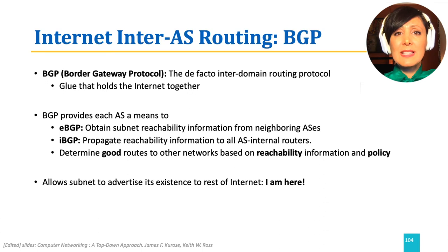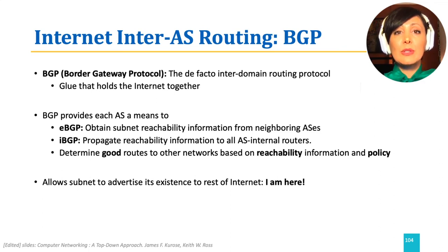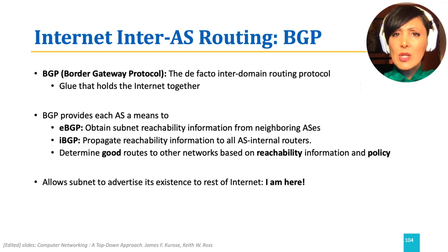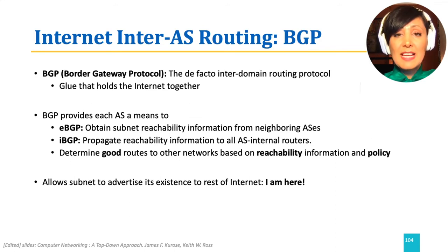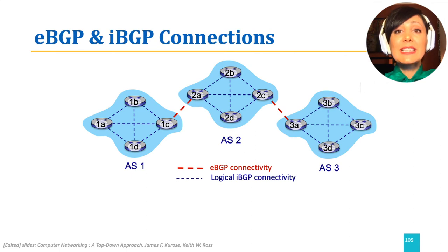Recalling the responsibilities of inter-AS routing: EBGP is responsible for obtaining subnet reachability from neighboring routers. IBGP propagates that reachability information to the routers within one AS. In other words, an AS tells the rest of the world that it exists using EBGP, and propagation of that information to each router within ASs is done by IBGP. BGP runs over TCP.